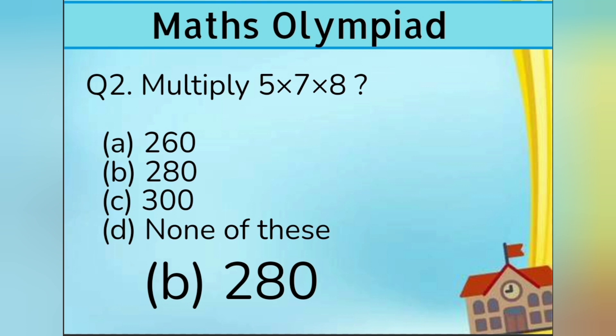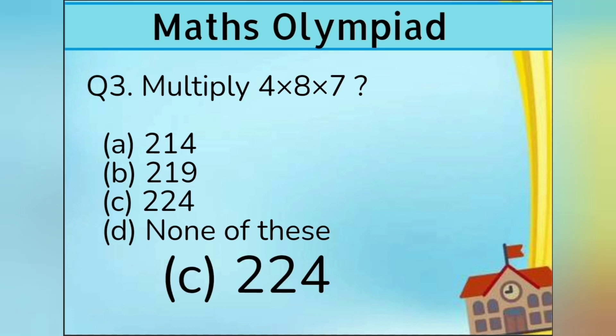Question number 3. Multiply 4 into 8 into 7. Option A 214, Option B 219, Option C 224, and Option D none of these. Answer is Option C 224.